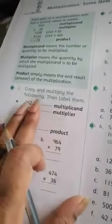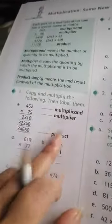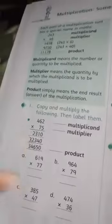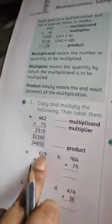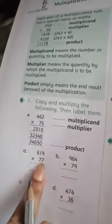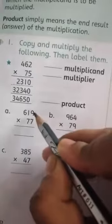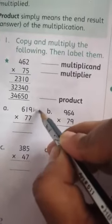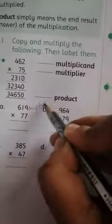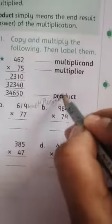Now copy and multiply the following. Since we have given special names, you can label them - that is your multiplicand and that is your multiplier. If you want, you can write it carrying.